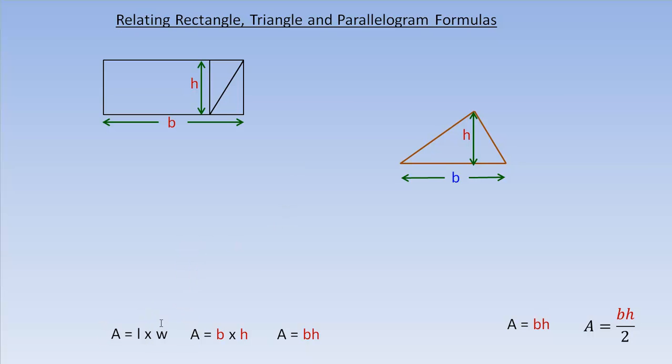So our area formula for a rectangle, we often call the dimensions length and width, so L times W, so this would be my length, this would be my width. For a parallelogram we often use base and height instead of length and width, so instead of calling them L and W, we call them B and H. And of course the formula is often abbreviated like this, when you write BH, it means the base times the height.